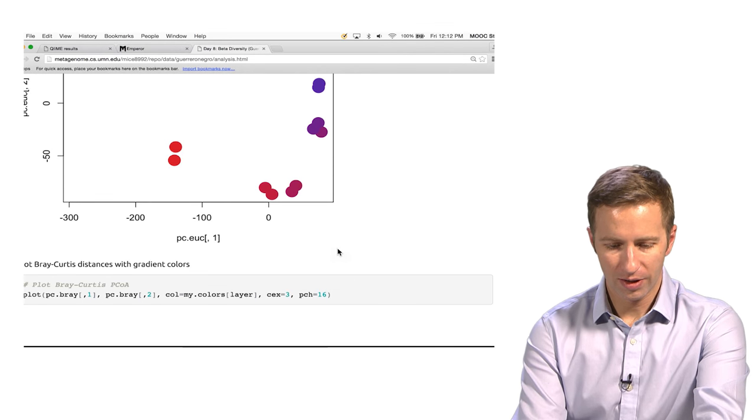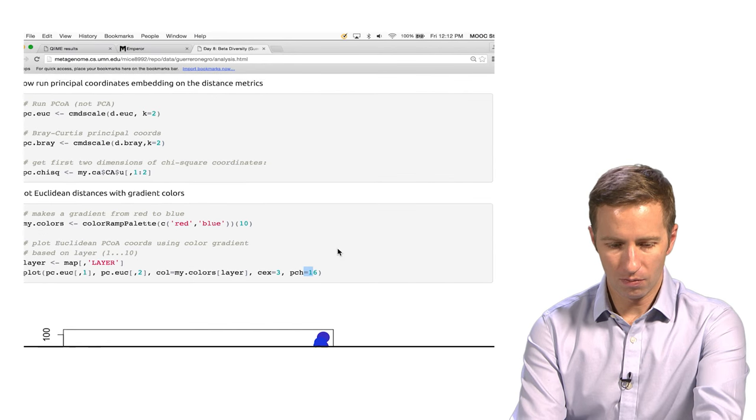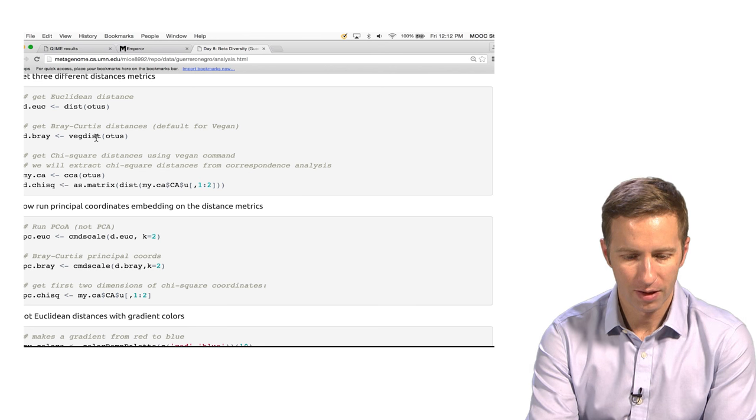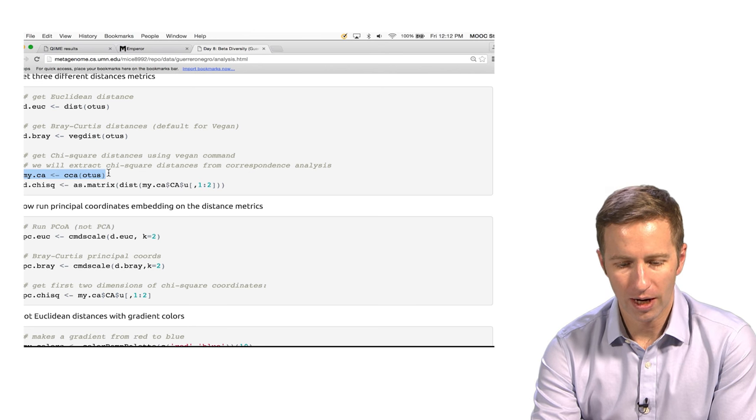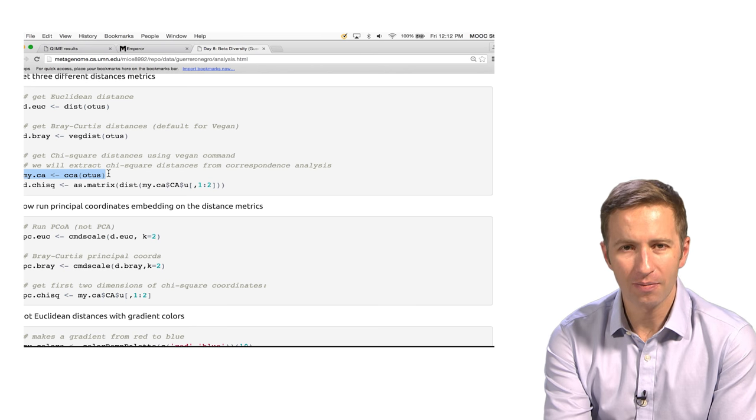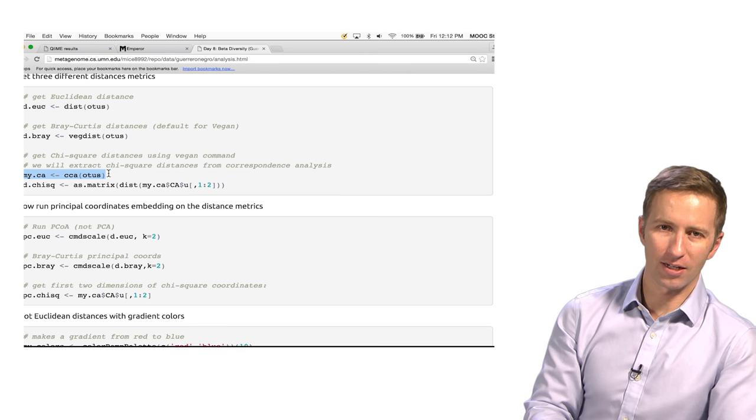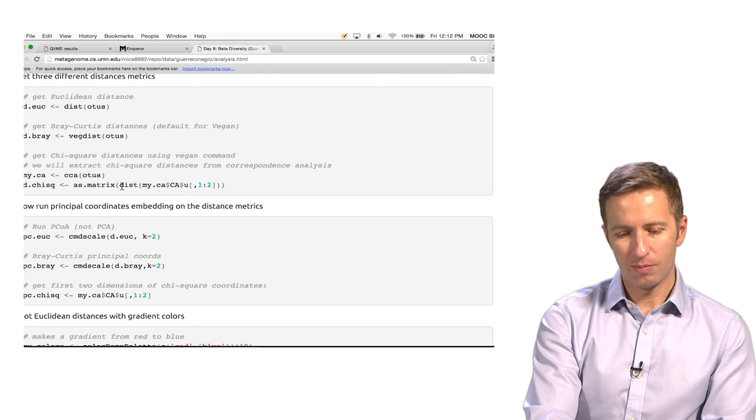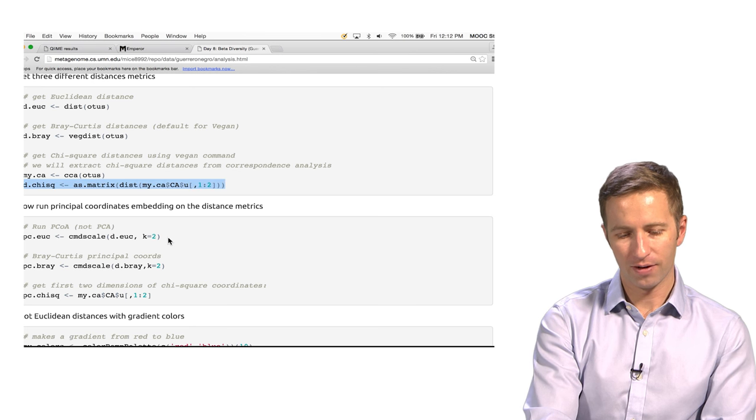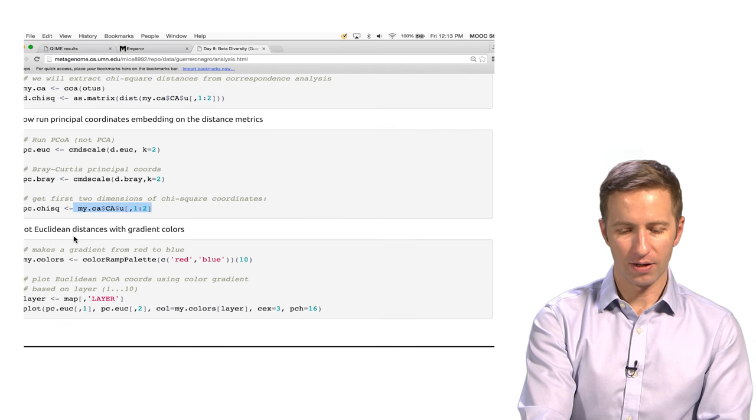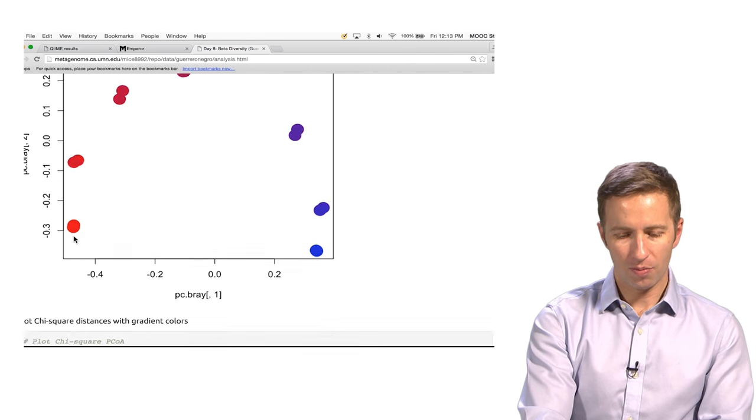So we're going to use the same approach, except that here we're actually using a command from the vegan package in R to calculate the chi-square distances. So this is called the CCA command. And I'm going to pull the distance matrix out of there. I'm also pulling the principal coordinates out of there. And then we're going to plot it.